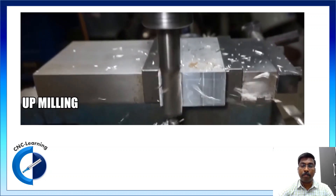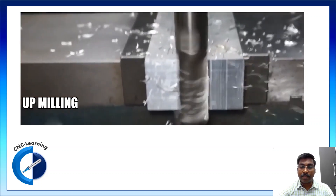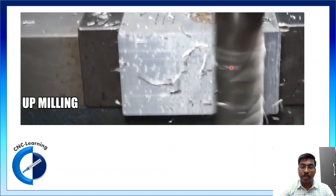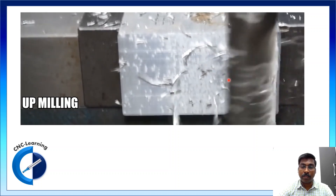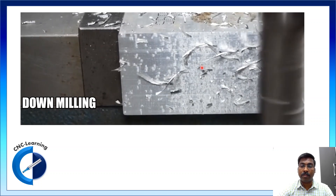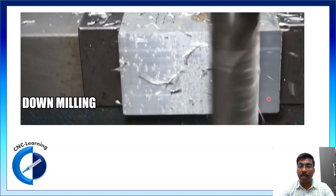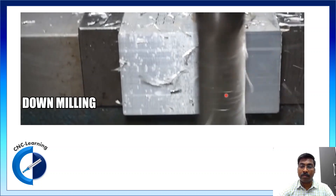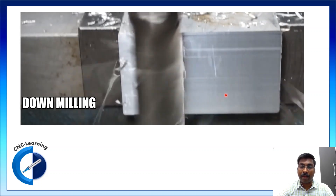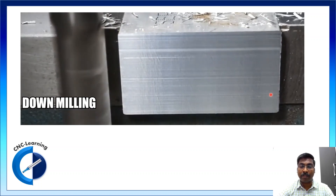In up milling, you can see that the chips which are cut come back in between the tool and the surface. Whereas in down milling, whatever chips are cut are thrown away from the cutting zone, resulting in a cleaner surface.